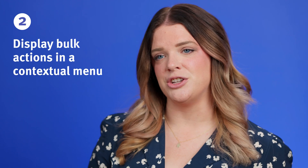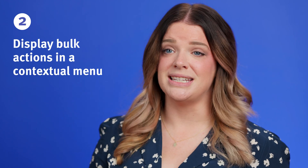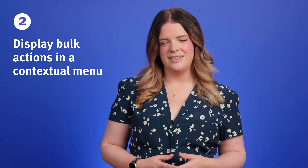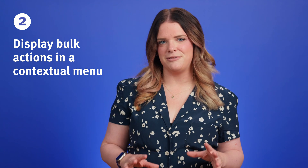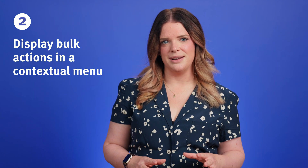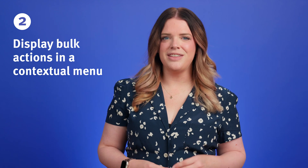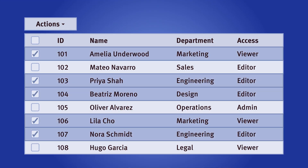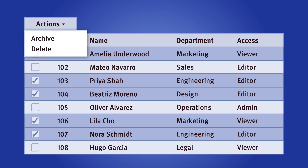Next, put bulk actions in a contextual menu that displays relevant actions to users after they've selected items. This action bar should appear only after they've selected items and include only the actions that are available. For example, if a user selected five items that are able to be deleted but not edited in bulk, include the delete function but not the edit function in that contextual menu.